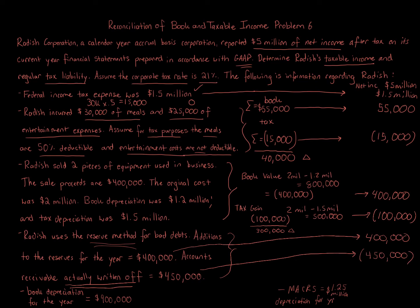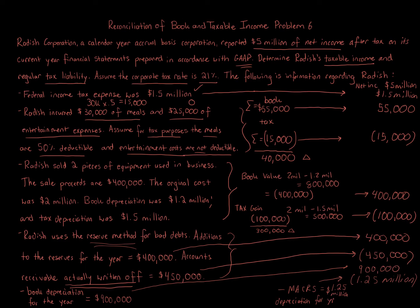For depreciation, book depreciation of $900,000 was taken, so we add that back as a positive. MACRS tax depreciation is $1.25 million, so we subtract that as a negative. The net depreciation adjustment is negative $350,000 — positive $900,000 minus $1.25 million.